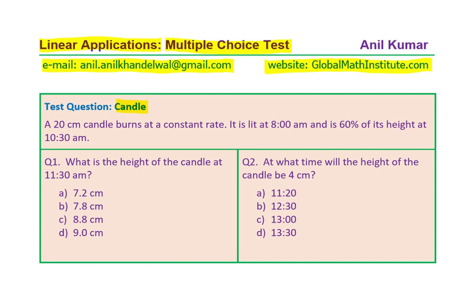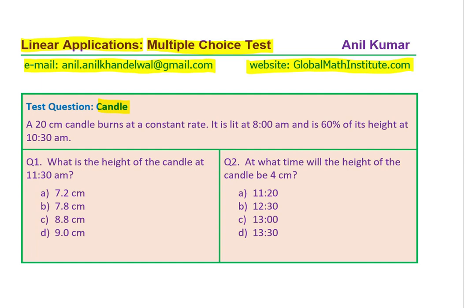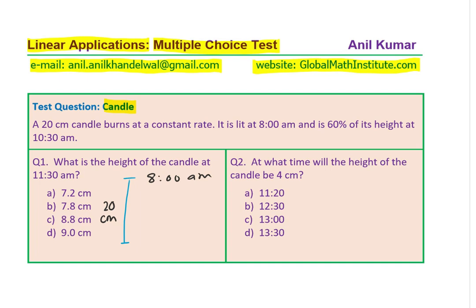Let's think about the steps involved to solve such a question. We are given that the candle is basically 20 centimeters high. It is burning at a constant rate. It is lit at 8 a.m., so at this time it is 8 a.m. It is 60% of its height at 10:30. So let's say this is the height, which is 60% of 20, and the time at this stage is 10:30. That means basically in 2.5 hours, we can figure out how much the candle has burned. Since the height decreased to 60% of 20, let's find what 60% of 20 is.